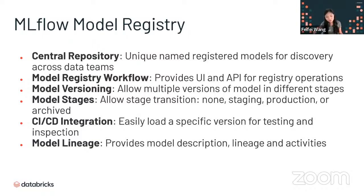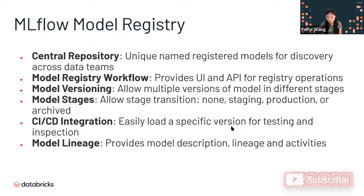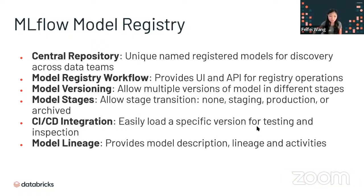You may sometimes change the model by just a little bit, like a parameter change, so you can see model version one, two, three. That allows multiple versions of a model in different stages. You can push your model transition from none to staging, to production, or archived. It's also great with CI/CD integration — you can easily specify a version, load it in to do your unit test and some additional inspection. It's great for model lineage, providing model description, lineage, and also activities.